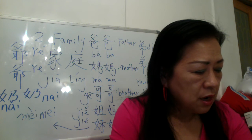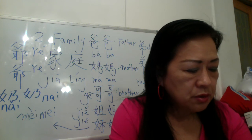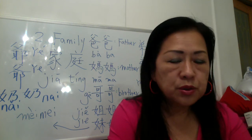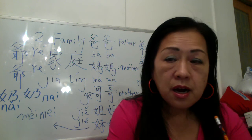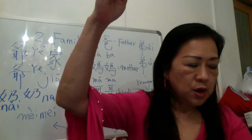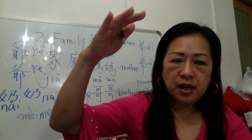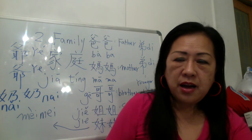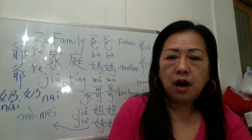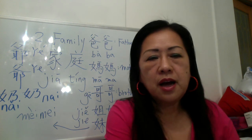Proper noun: 高文中 — a personal name. 这个人叫高文中. 高 also has another meaning: tall. 那个人是高 — that person is tall. 那个比我高 — that person is taller than me.